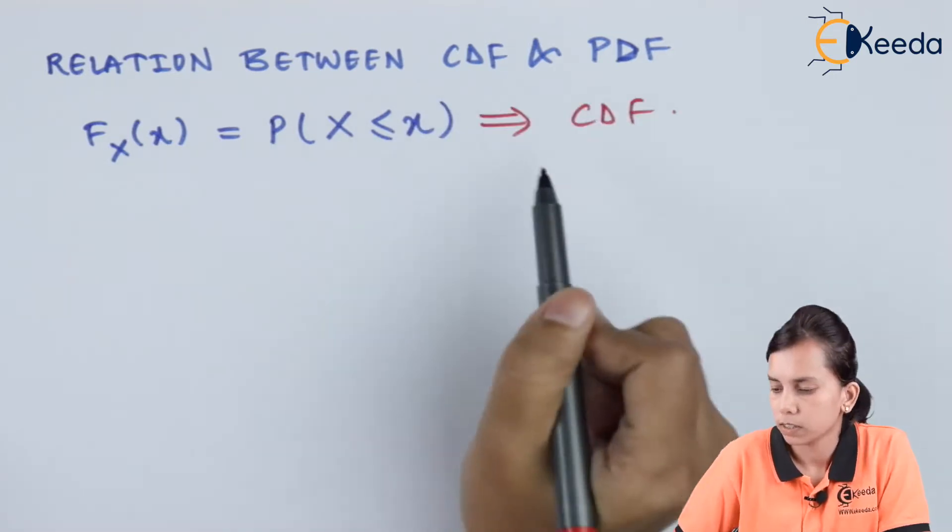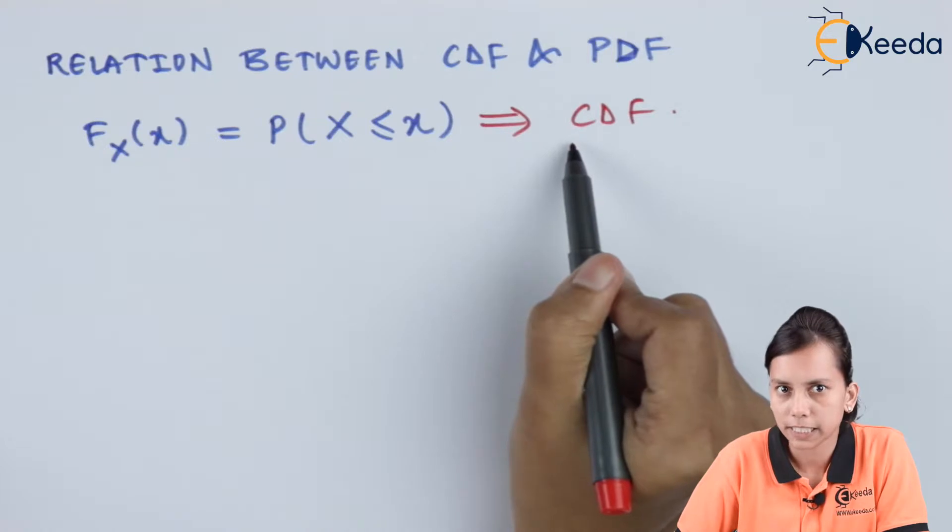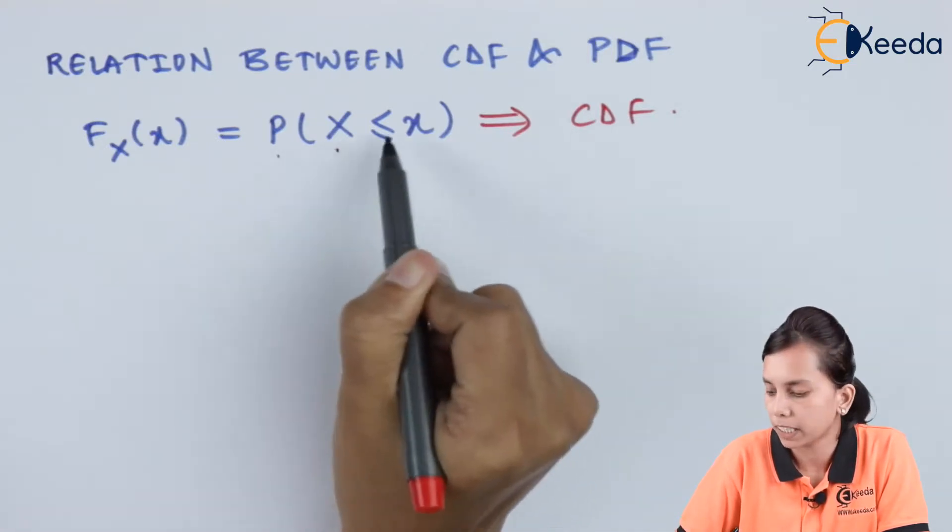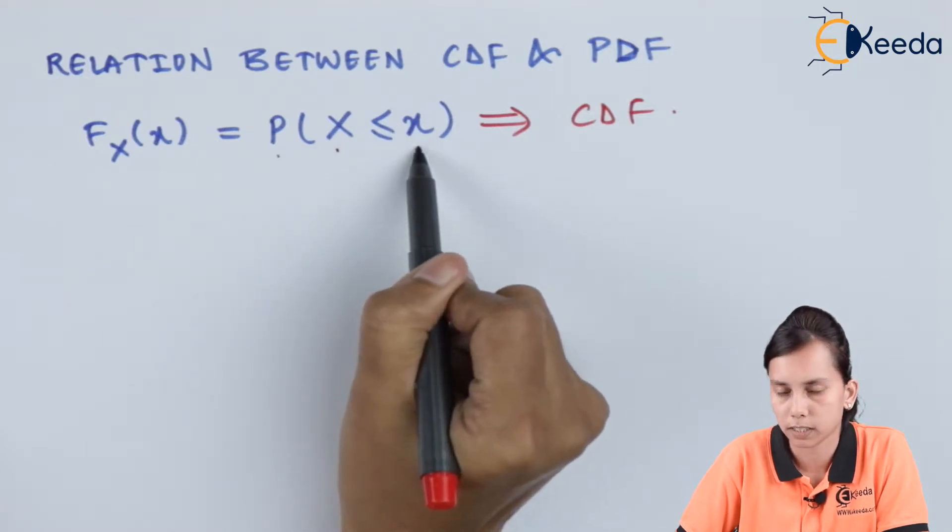This is how we can define the CDF, that it equals the probability of the random variable when it is less than or equal to small x.